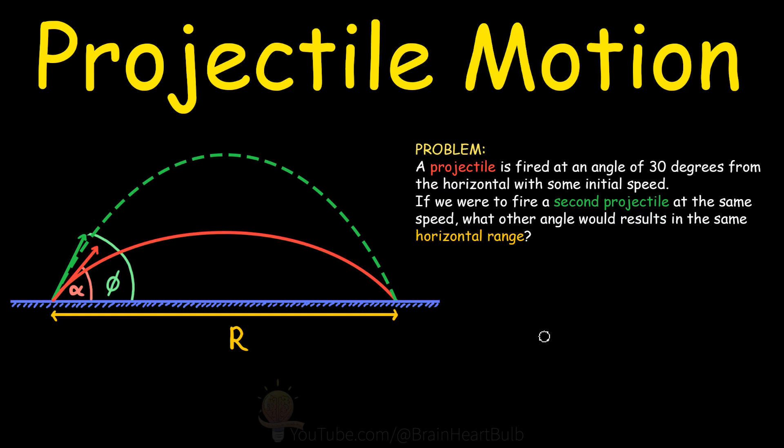So I've color coded my two projectiles here. The red projectile is fired at 30 degrees from the horizontal. The second projectile in green, we don't yet know what the angle is.